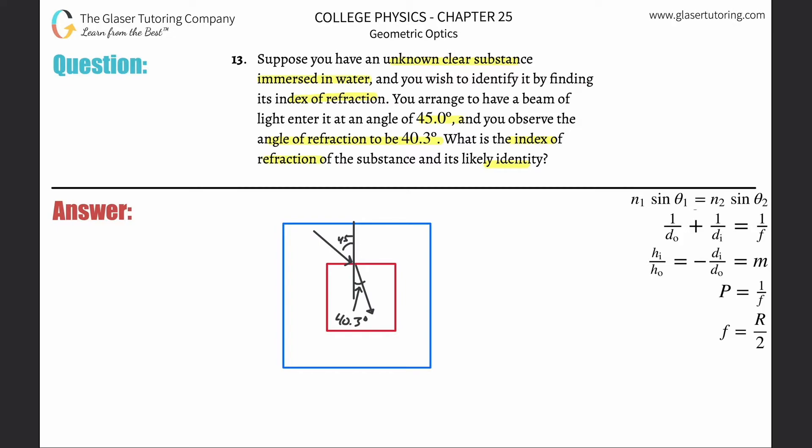Now the thing is, this light ray initially is in water and this is in some unknown substance. So what we can do in order to solve this is use Snell's Law. This says that the index of refraction in medium one multiplied by the sine of the angle between the ray and the normal in medium one will equal the whole thing symmetrically for two.